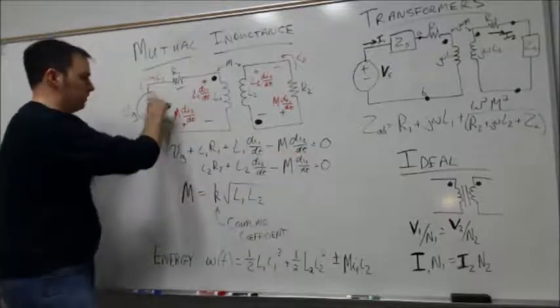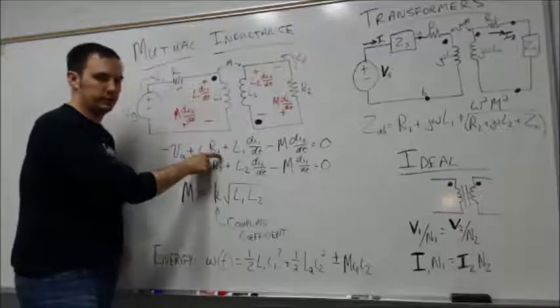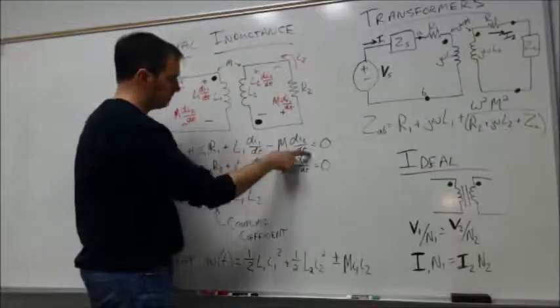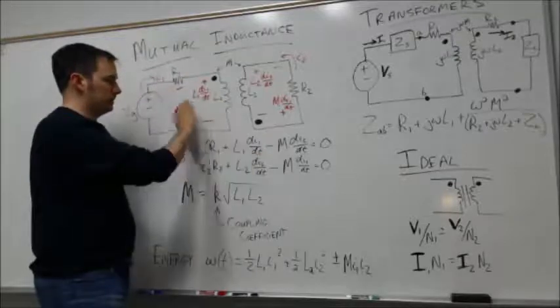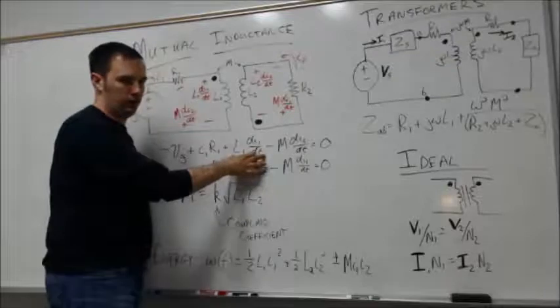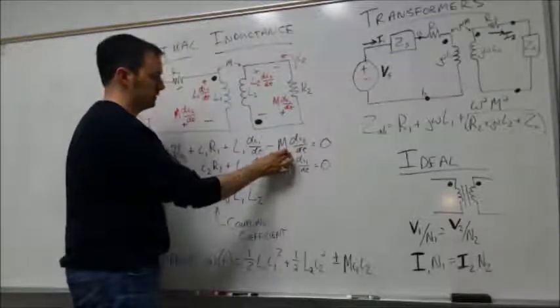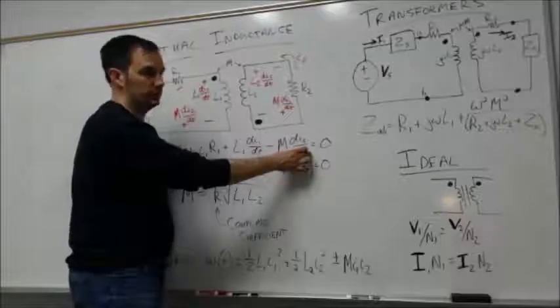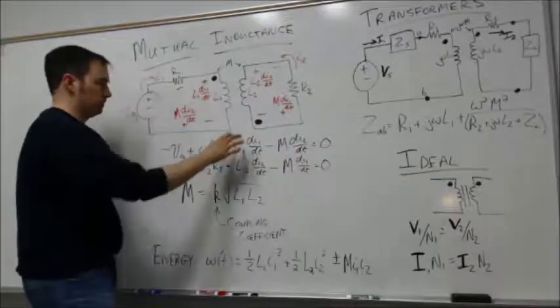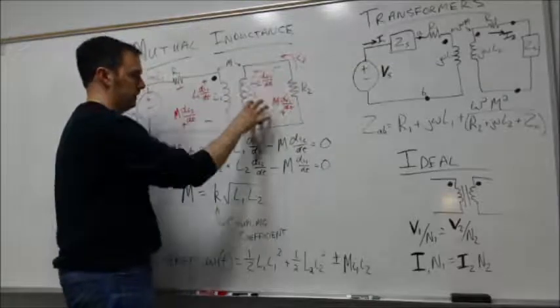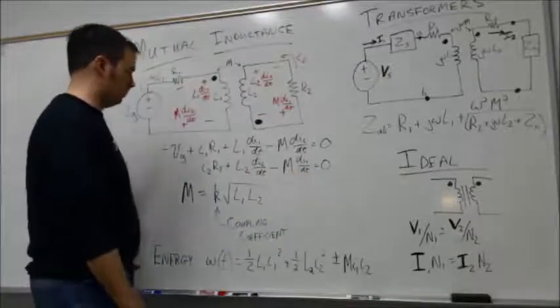As we write out these mesh current equations, if I go around this loop, I have minus Vg because I'm going through a voltage rise from minus to plus. I have i times R which is my voltage drop across my resistor, and then I have these two terms: the voltage drop due to self-inductance, which we define as L times di1/dt, and then this mutually induced voltage which is M times di2/dt because this is impacted by the current traveling in this branch of the circuit. Similarly, we can write a mesh current equation for this side which accounts for not only the self-inductance term but the mutually induced voltage as well.